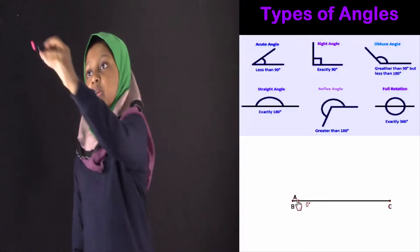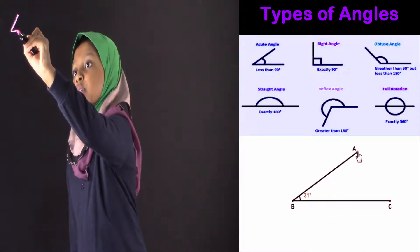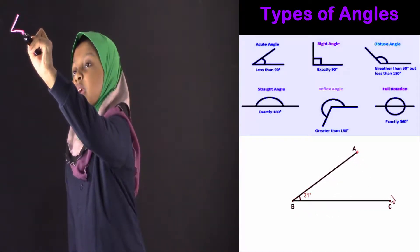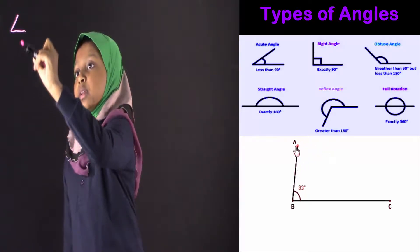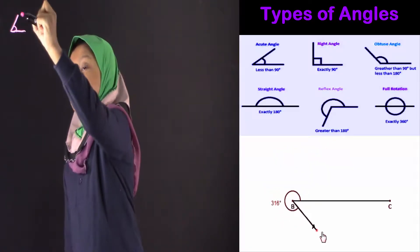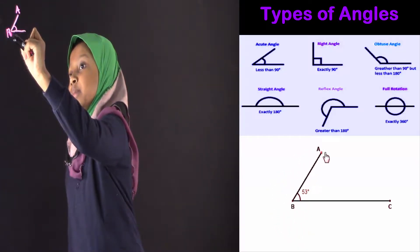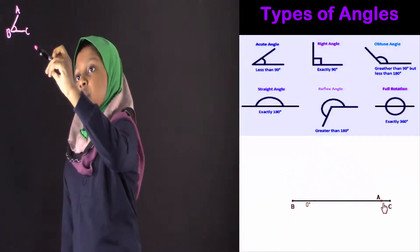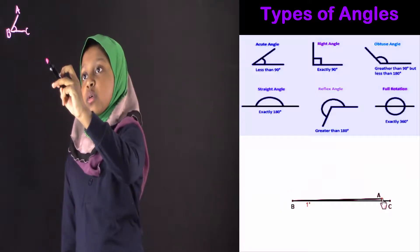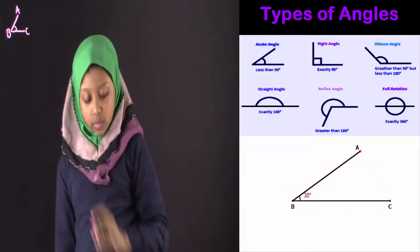First, over here, I'm drawing an angle. So this is an angle. The meaning of angle is it's two straight lines that join together and make an end point. So this is an angle. Now I'm going to label this angle. Suppose this is A, this is B, and this is C. So I've told you the definition of angle.